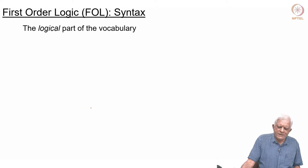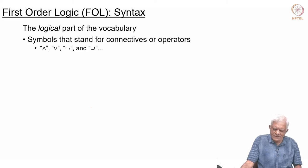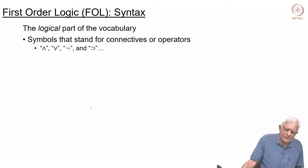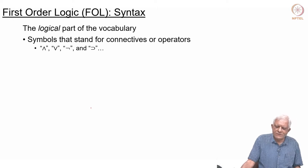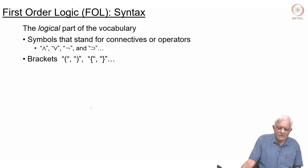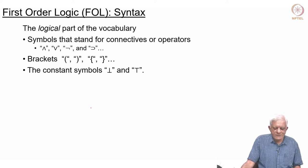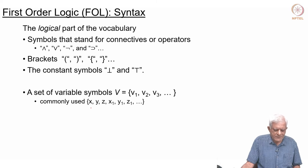Like in propositional logic there is going to be a logical part of the vocabulary, which is kind of constant and does not depend upon which domain you are talking about. It is very similar to what was there in propositional logic: we have a set of connectives or operators — our old friends and, or, not, implication — we have a set of brackets and so on. But in first order logic there are more things which are also part of the logical vocabulary. Constant symbols like top and bottom, if you remember, were part of propositional logic as well; they are part of this logic as well.